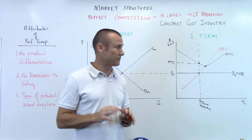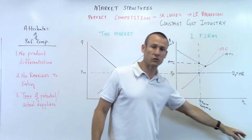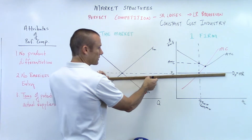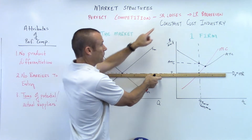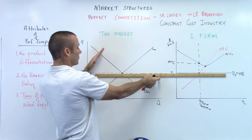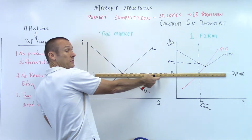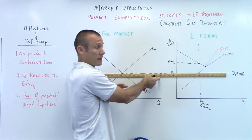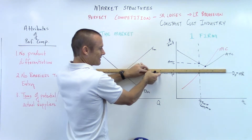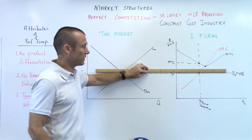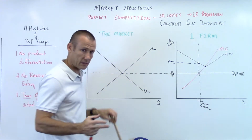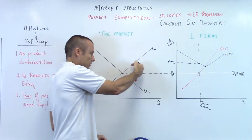Now let's show the adjustment to the long run break-even point. What's going to happen? When we're incurring losses, supply is going to shift left. As supply shifts to the left, the price in the market goes up. The price firm, the demand, and the MR line are all moving up. I want you to think of the top of my ruler as the new MR curve — supply is definitely shifting left, price market's going up.